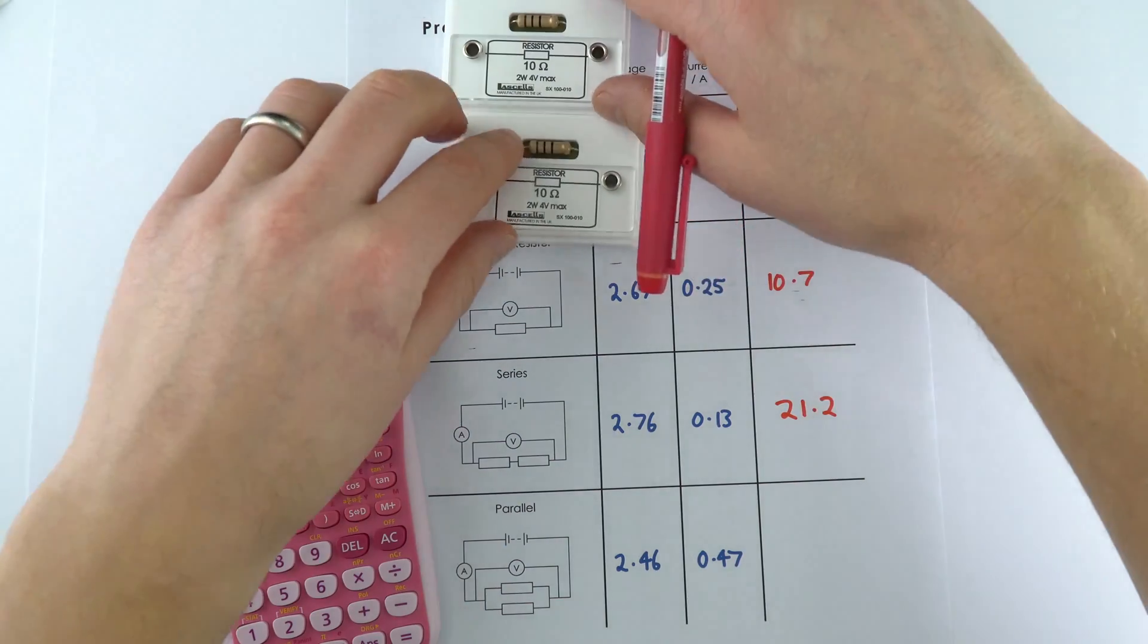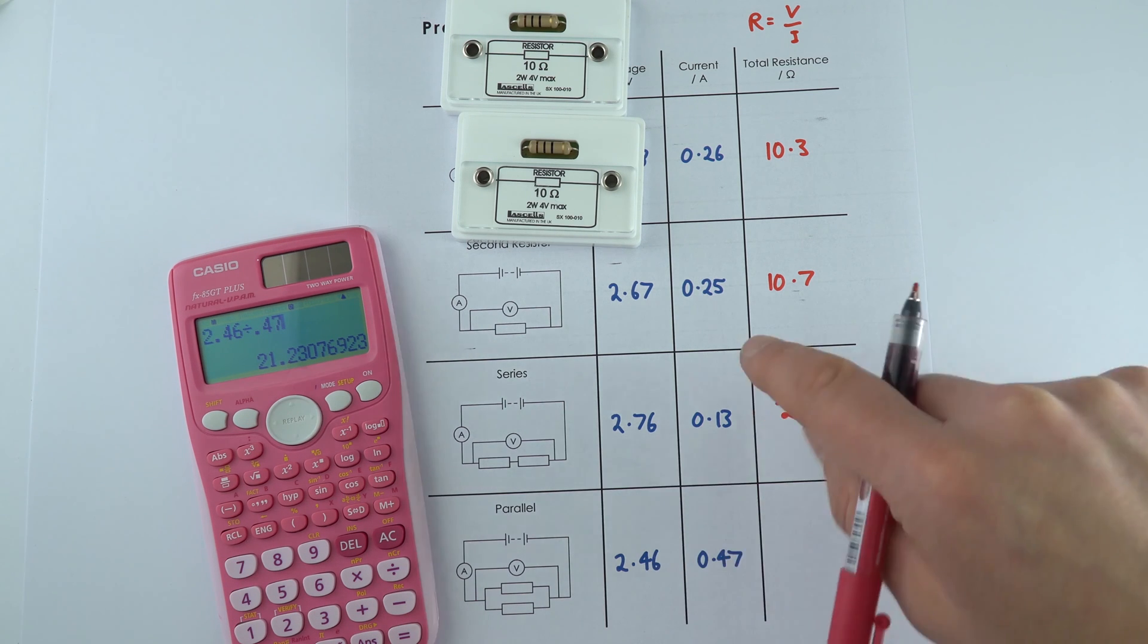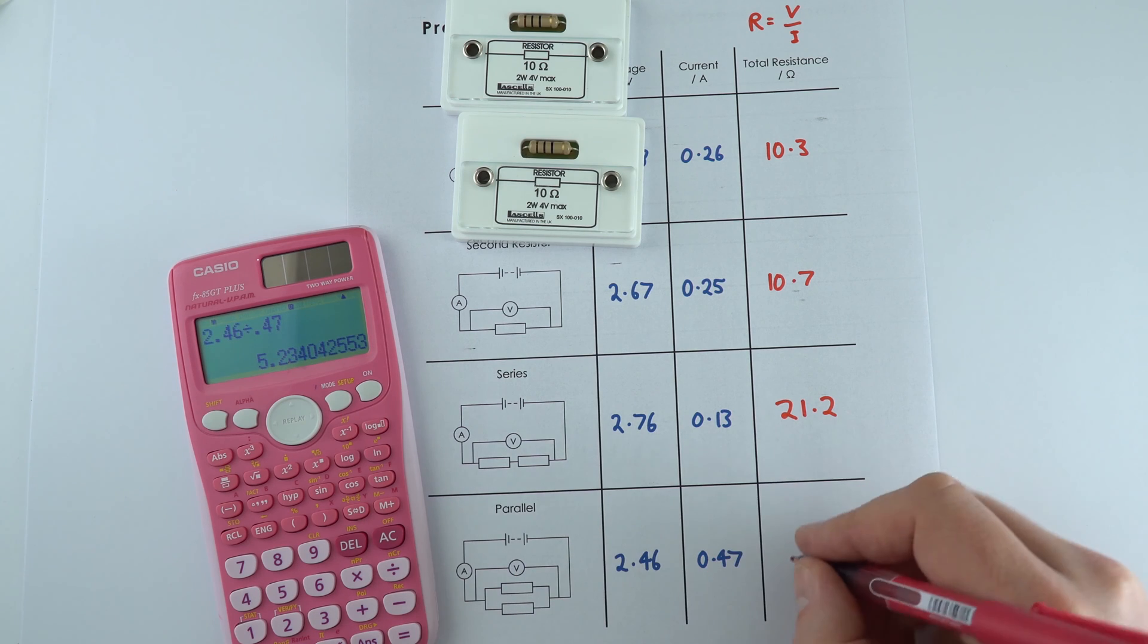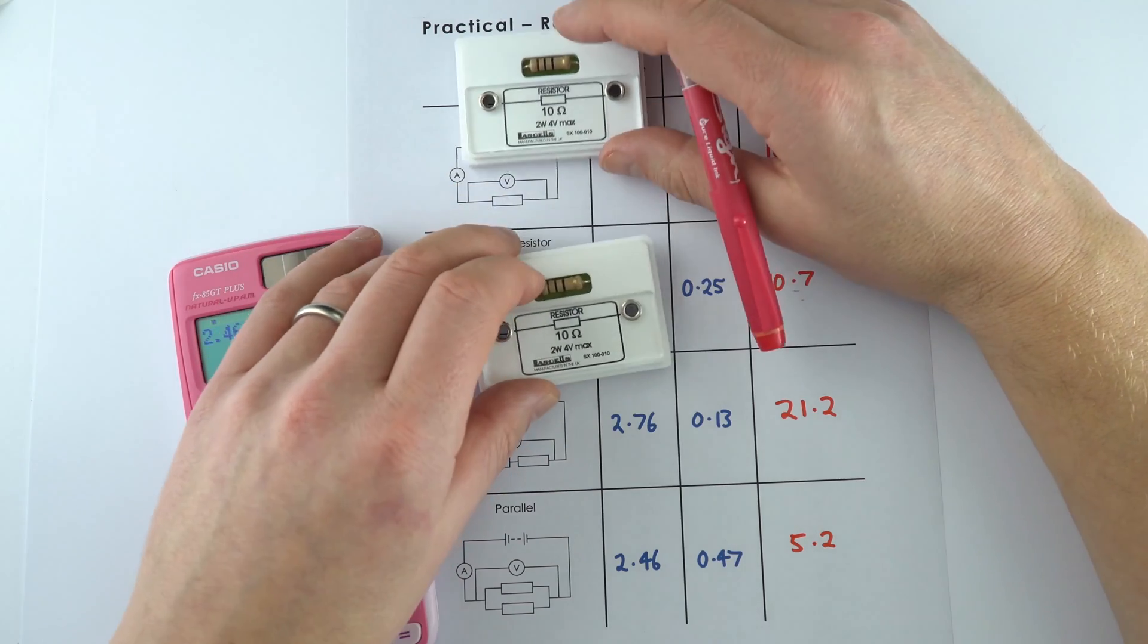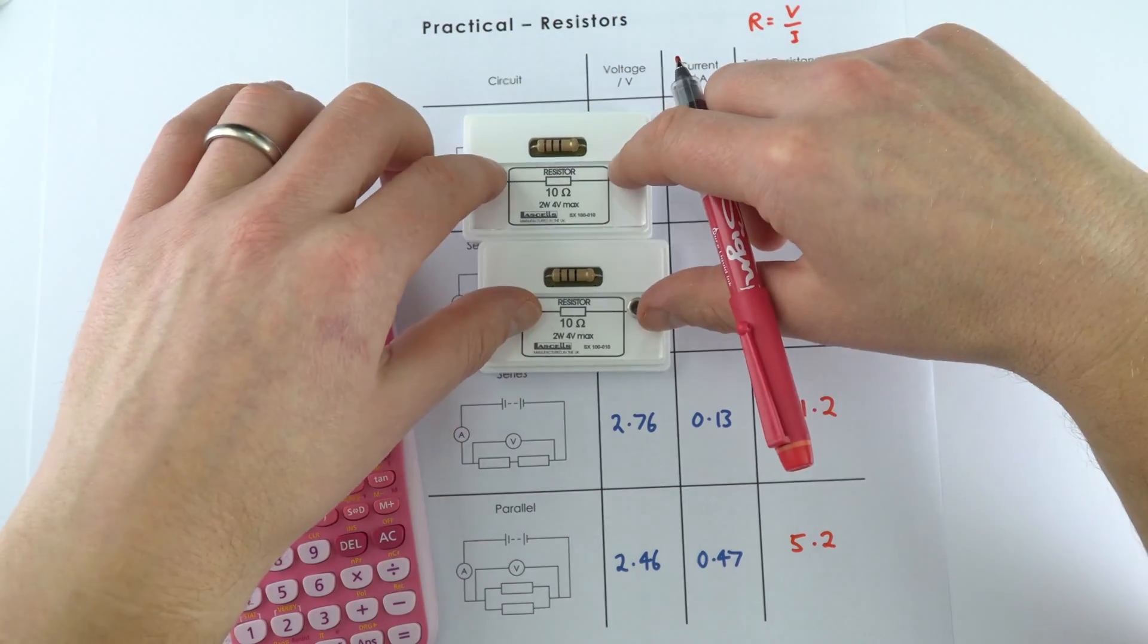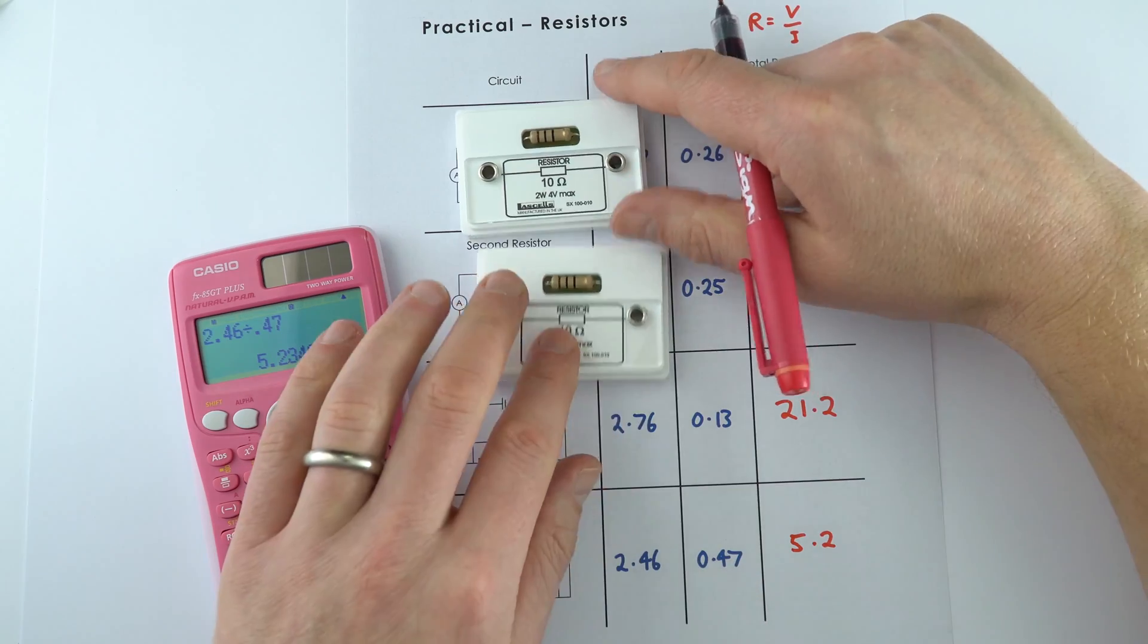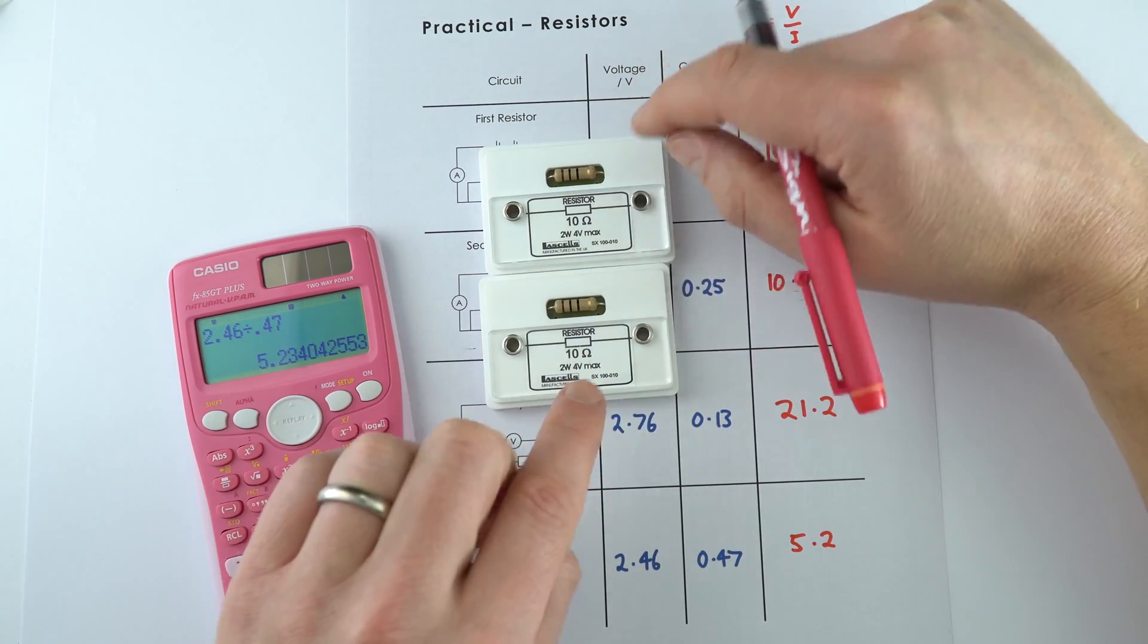When they were in parallel though, we had 2.46 divided by 0.47, and these are just the values that I chose when I paused the video and looked at the readings. And this gives 5.2, so actually when these resistors are connected in parallel their combined resistance goes down, and actually it goes down by about half. So rather than being 10 individually, together we half that to make 5.